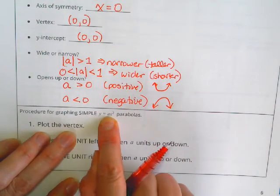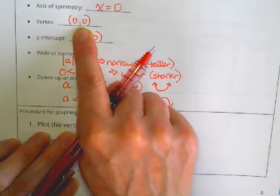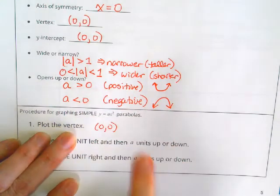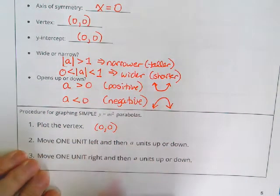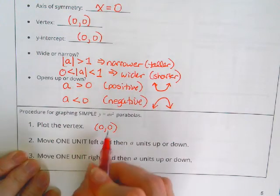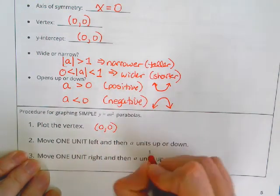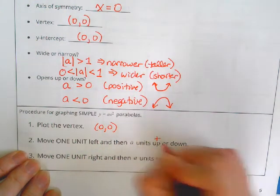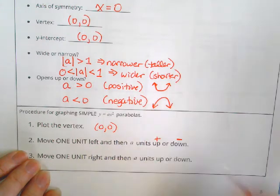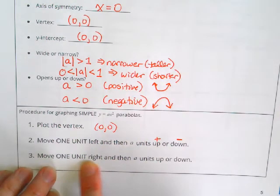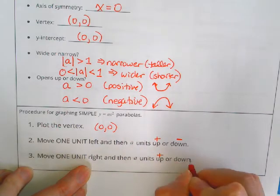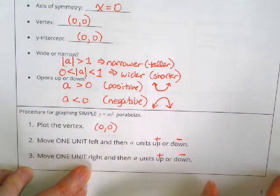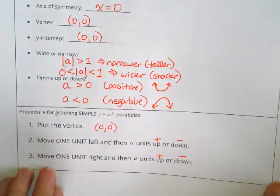So what do we do? First thing we do is we plot the vertex. Well, what's the vertex when it's in this form? Right up here, zero, zero, every single time when it's of that form. And how are we going to get two other points? We're going to move one unit to the left from the vertex, and then a units up. That's if a is positive or down, that's if a is negative. And we're also going to move one unit to the right again from the vertex, and a units up if it's positive and down if it's negative.